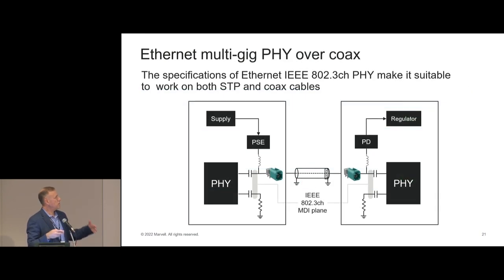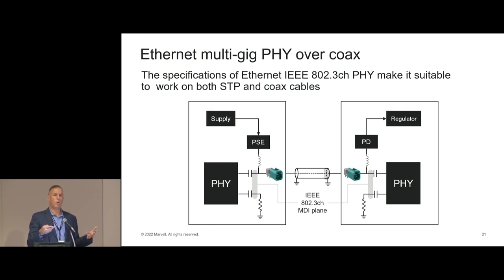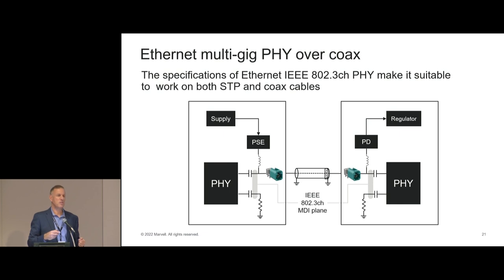The last question is: can Ethernet run over coax? The answer is yes. Today Ethernet is developed for STP, but it can easily also run over coax with no need to change the IEEE standard, because the IEEE standard cares about what's called MDI. More details available on request.